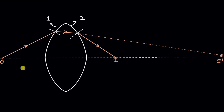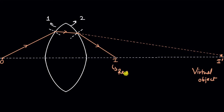That point — I-dash — is really the virtual object. This is the virtual object for this real image. Just as with the mirror, where the rays about to converge were interrupted and the point where they would have converged served as the virtual object, here too the point where the rays would have converged acts as the virtual object for the second interface.